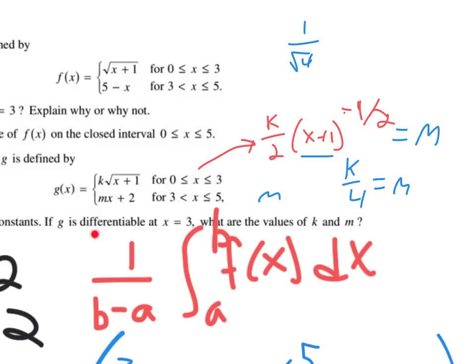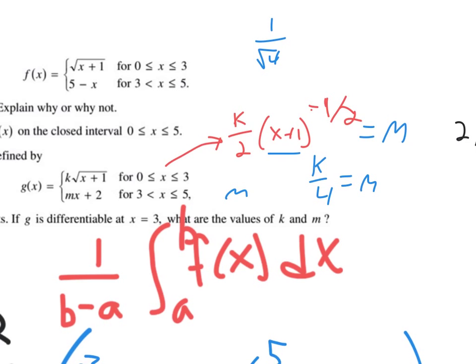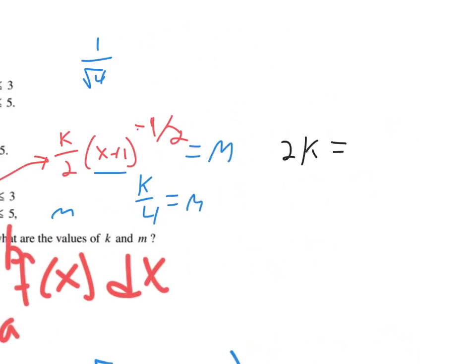However, differentiability implies continuity. So you know they have to be continuous at this point. So the limit from the left as x approaches 3 and the limit from the right should equal each other. So let's plug 3 in black into the top and to the bottom. 2K is what I've got for the top. And then when I plug in 3 into the bottom, I'm going to get 3M plus 2.